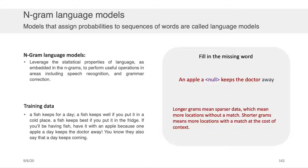If we kept going and took the context around the blank word and made it even wider — using three words as context — and we searched the training data for 'an apple a' followed by a word followed by 'keeps the doctor,' there's no instance of that particular sequence anywhere in the training data. Our language model would be unable to fill in the missing word. In practice, longer grams will mean sparser data, which means more locations without a match. And shorter grams will mean more locations with a match, but at the cost of important context, which might inhibit performance.